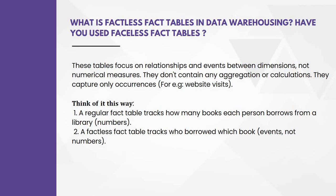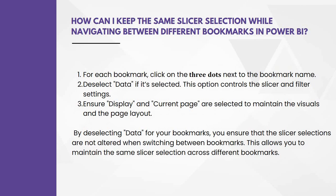The next question is from data warehousing: what are factless fact tables, and have you used them? These tables focus on relationships and events between dimensions, not numerical measures. They don't contain any aggregations or calculations — they capture only occurrences, for example, website visits. Think of it this way: a regular fact table tracks how many books each person borrows from a library — those are numbers. A factless fact table tracks who borrowed which book — that is the event, but not the numbers.